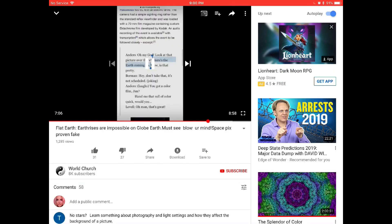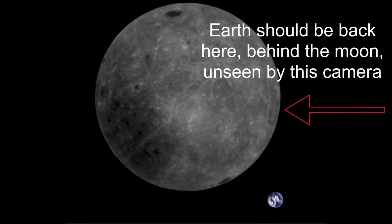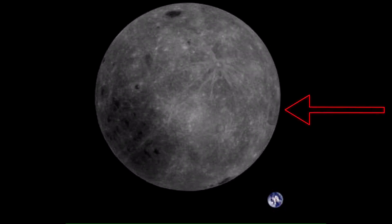Okay, so let's take a look at some of their lies now. Do you see how absurd this photo looked to me when I first saw it? I just started laughing because the Earth is in the completely wrong position in the sky. Earth cannot be on the side of the moon like that — it can only be on the near side, at the top of the near side of the moon, in its sky. So this is clearly a fake photo.